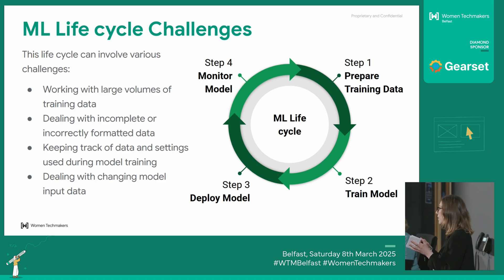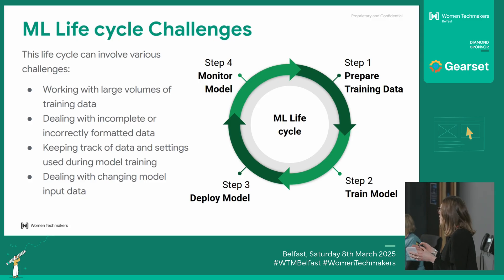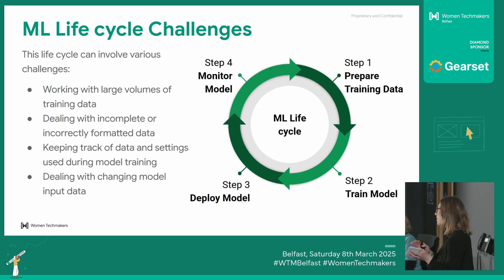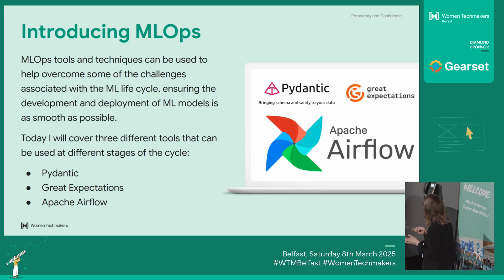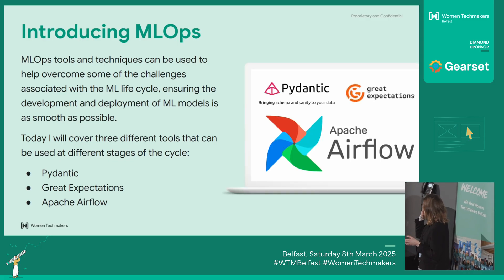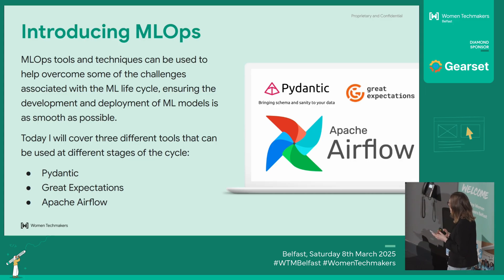The final challenge is dealing with changing model input data. If you train a model on older data and deploy it into production and you're getting requests coming in, sometimes the statistical nature of that data can be a bit different from what you trained the model with, and that can make the predictions less accurate. This is kind of where MLOps comes in — there are so many tools and techniques to manage some of these challenges in the lifecycle.